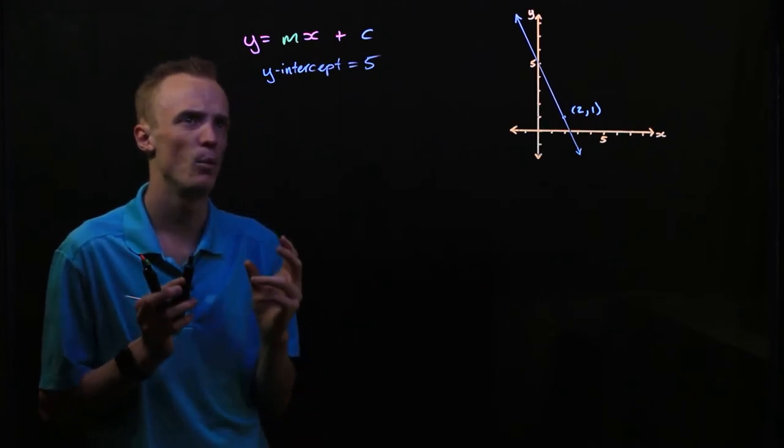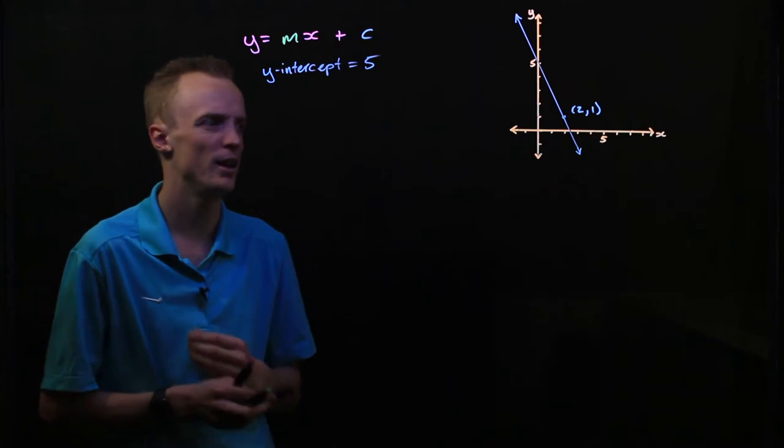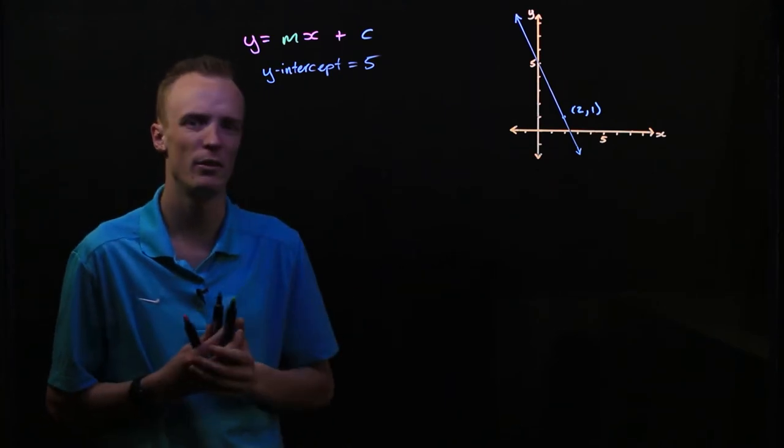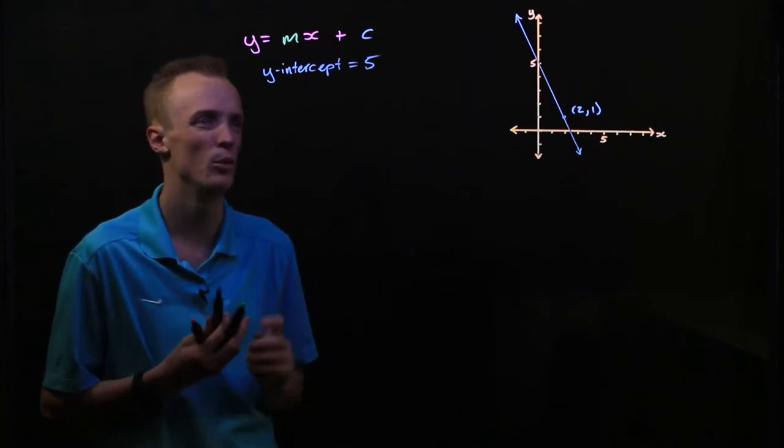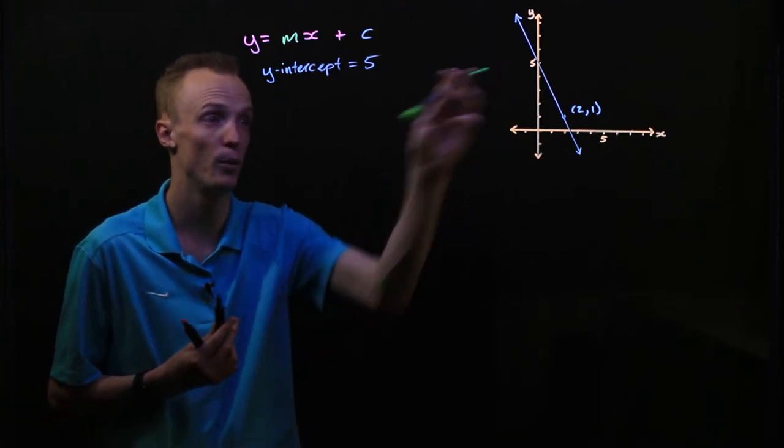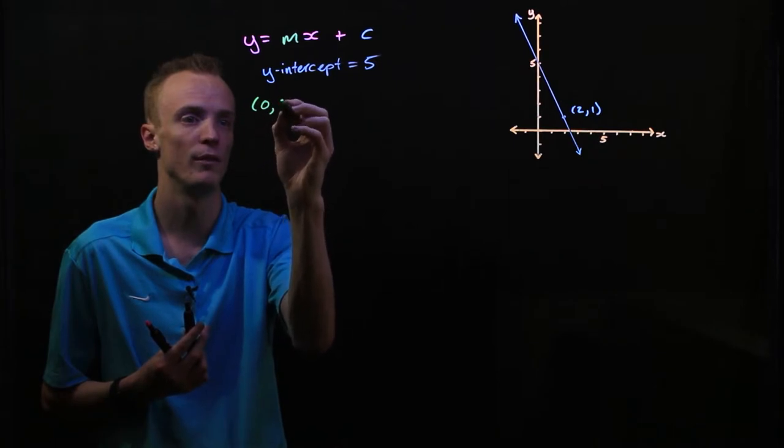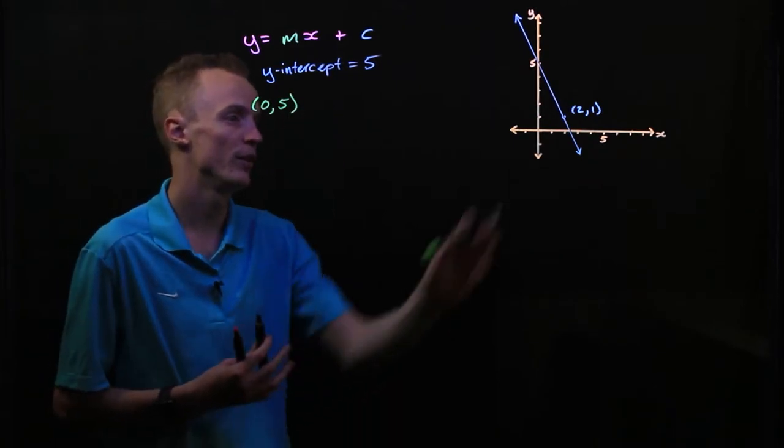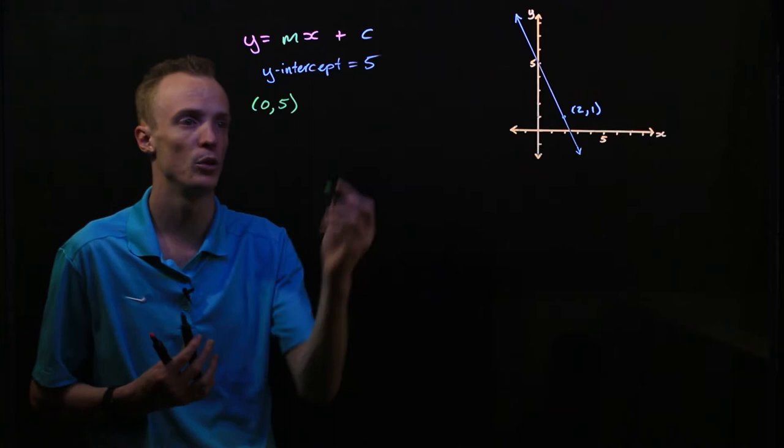What we need to find is this m value, or our gradient. To find the gradient we can use two coordinates. Luckily here we have two coordinates. We've got the y-intercept which is the coordinate (0,5) and we've got the other coordinate we've been given of (2,1).